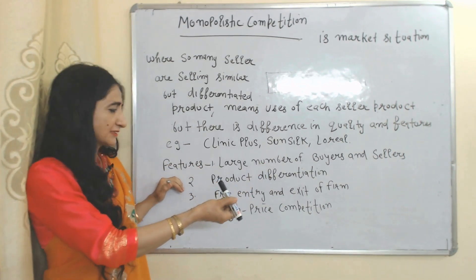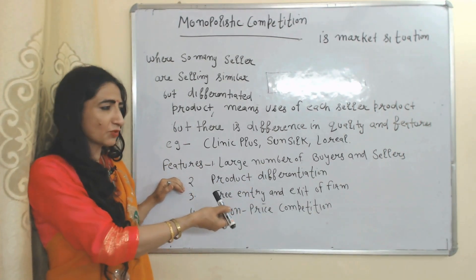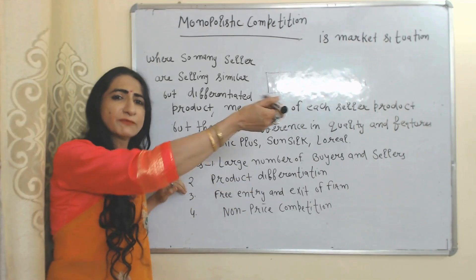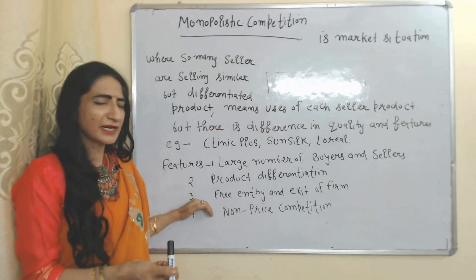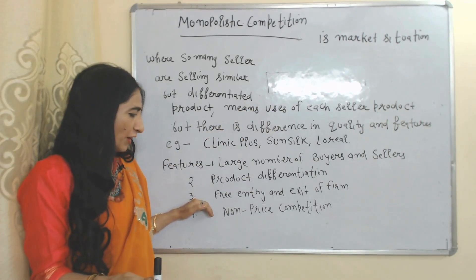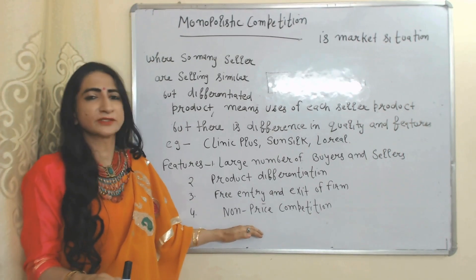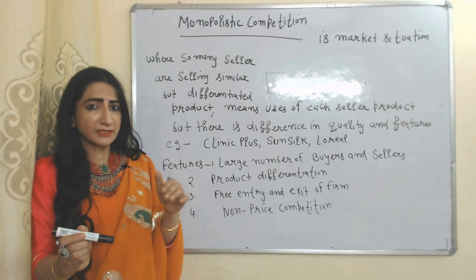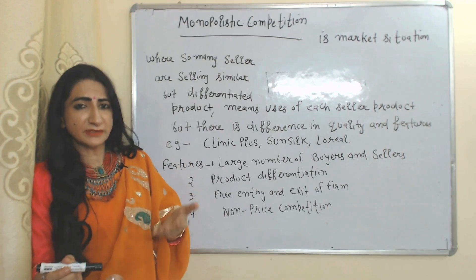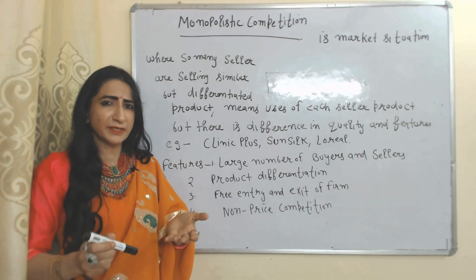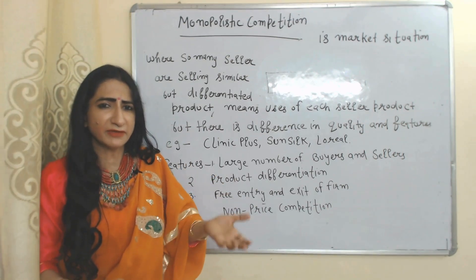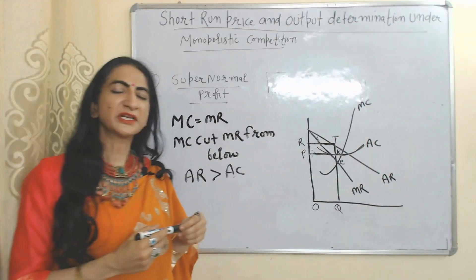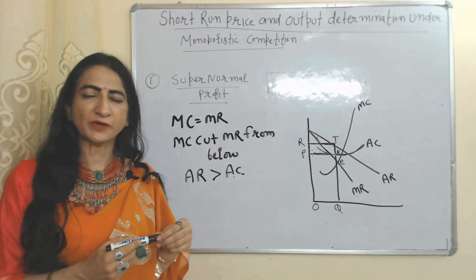Features of monopolistic competition are: large number of buyers and sellers, product differentiation meaning quality and features of each seller's products are different from others, free entry and exit of firms, and non-price competition — meaning firms don't compete with each other on the basis of price; they mainly compete by giving advertisements or by providing after-sale services.